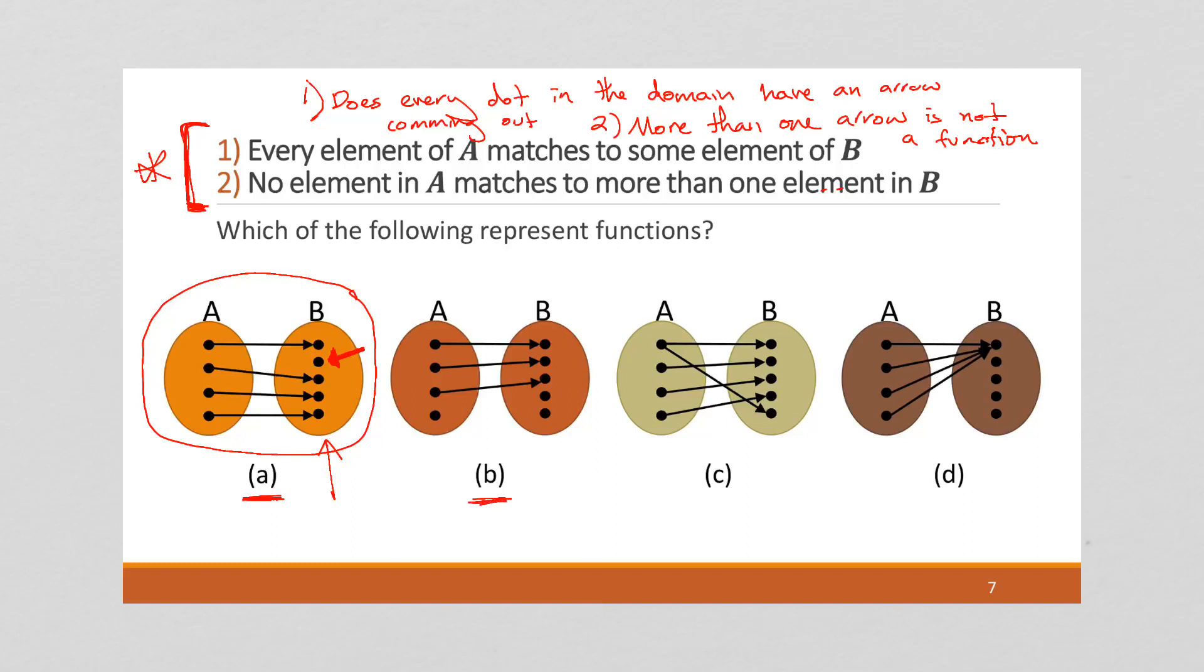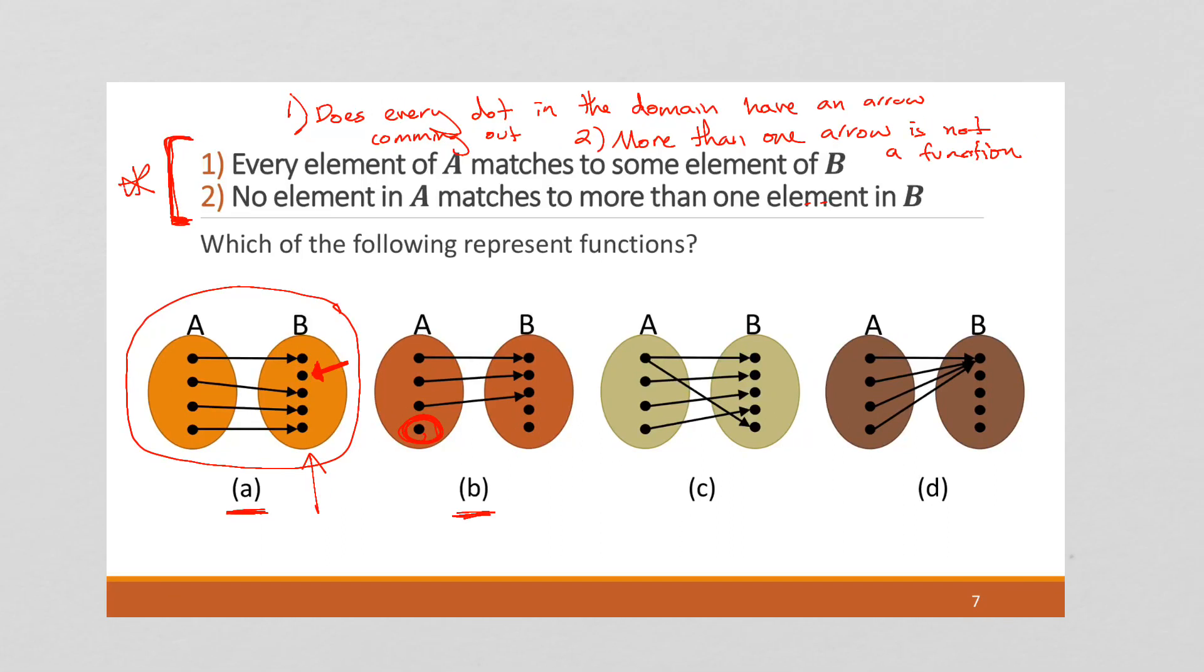Okay. Let's take a look at B. Now, B is not a function because it has this lone dot right here with no arrows. And so that violates not a function. That violates rule one.